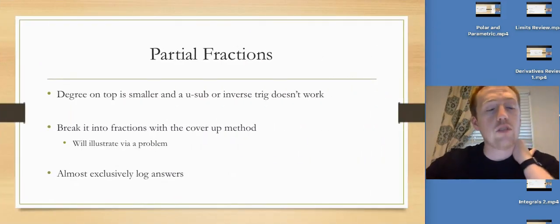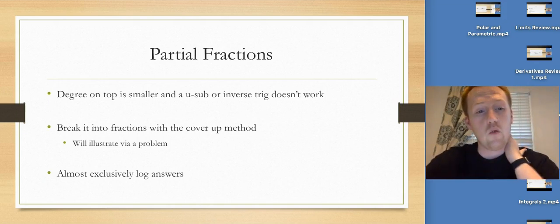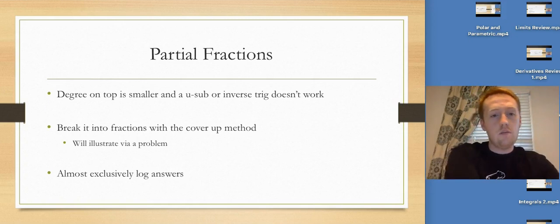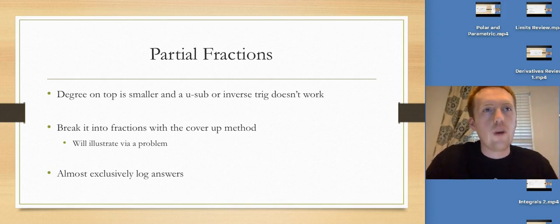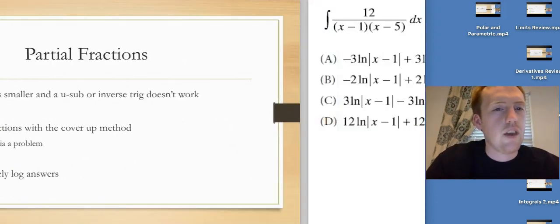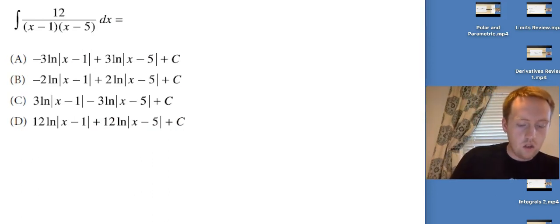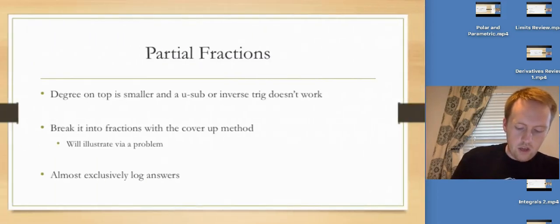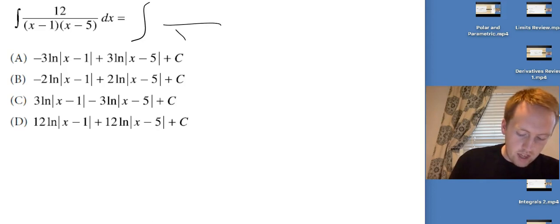Alright, let's look at partial fractions. Basically, when that's going to happen is the degree on top is smaller and a u-sub or inverse trig thing isn't working. What we want to do is break it into fractions with our cover-up method, which I'll illustrate in the problem that we're about to do. And this almost exclusively leads to logarithmic answers. So if you're doing partial fractions, you're going to more than likely get some sort of log answer. I can't think of many situations where you wouldn't. Okay, so cover-up method. What we're going to do, we want to take this integral.